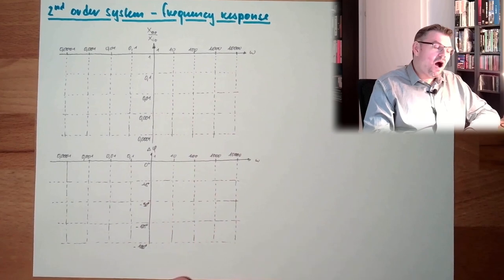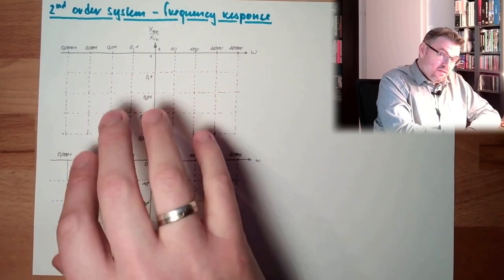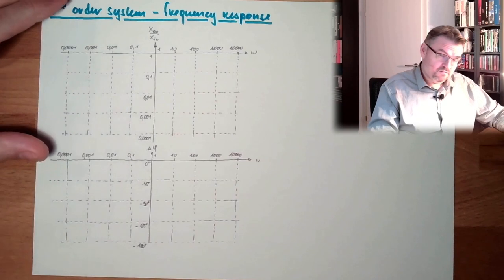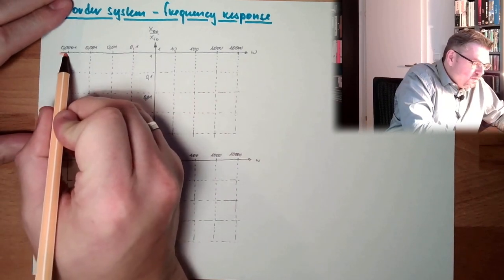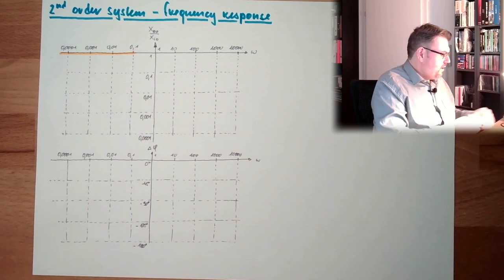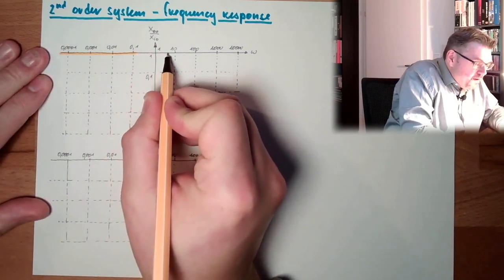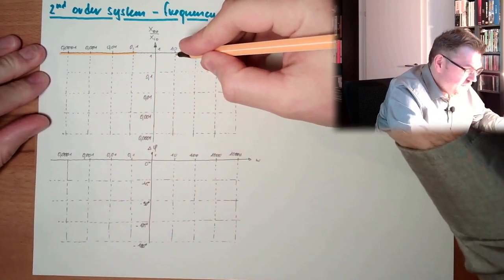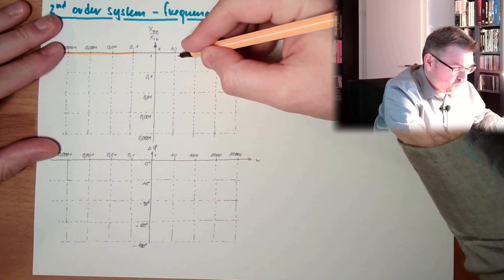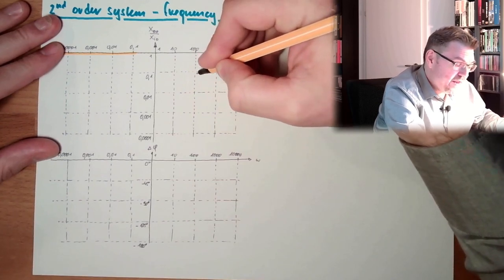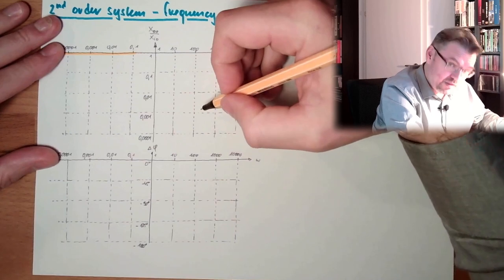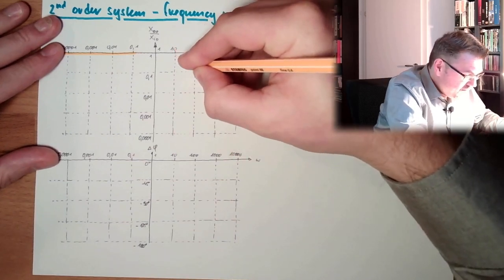If we are far below the natural frequency, we will stay at 1. Above the natural frequency, we will drop — and drop much steeper than with a first order system. For a first order system, 10 times higher frequency gives only a factor of 10 lower output. Here with a second order system, 10 times higher frequency gives a factor of 100 lower output.